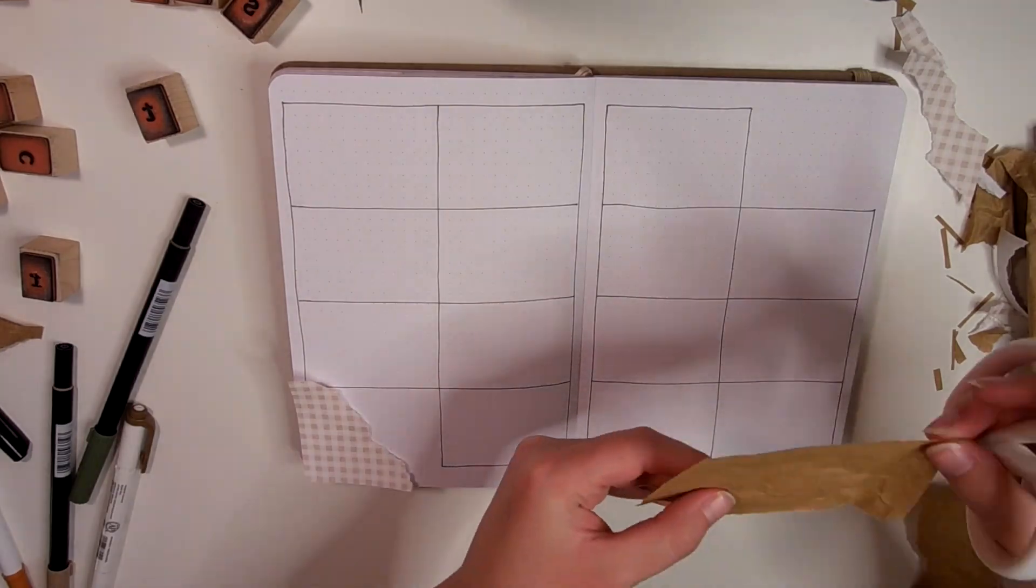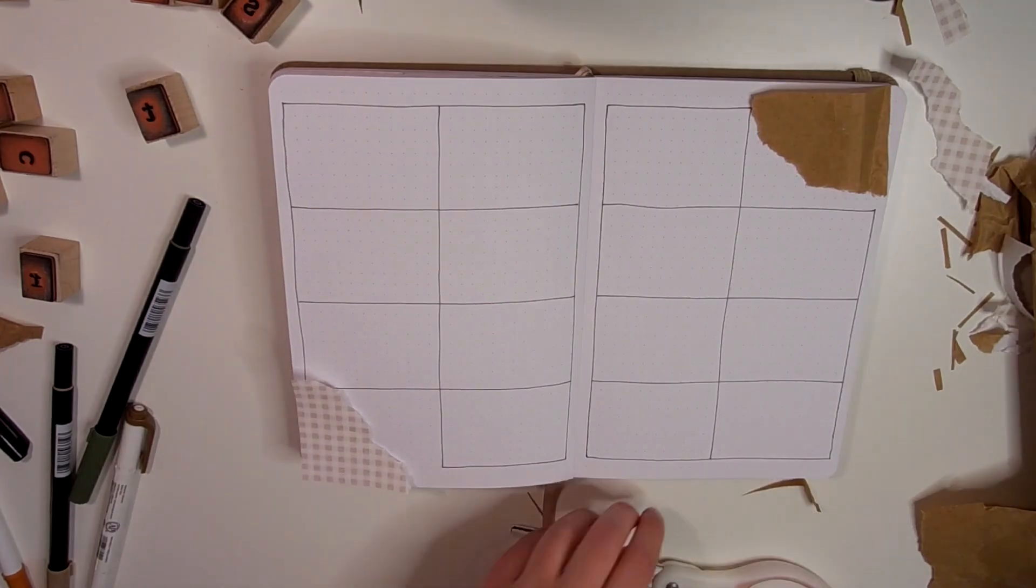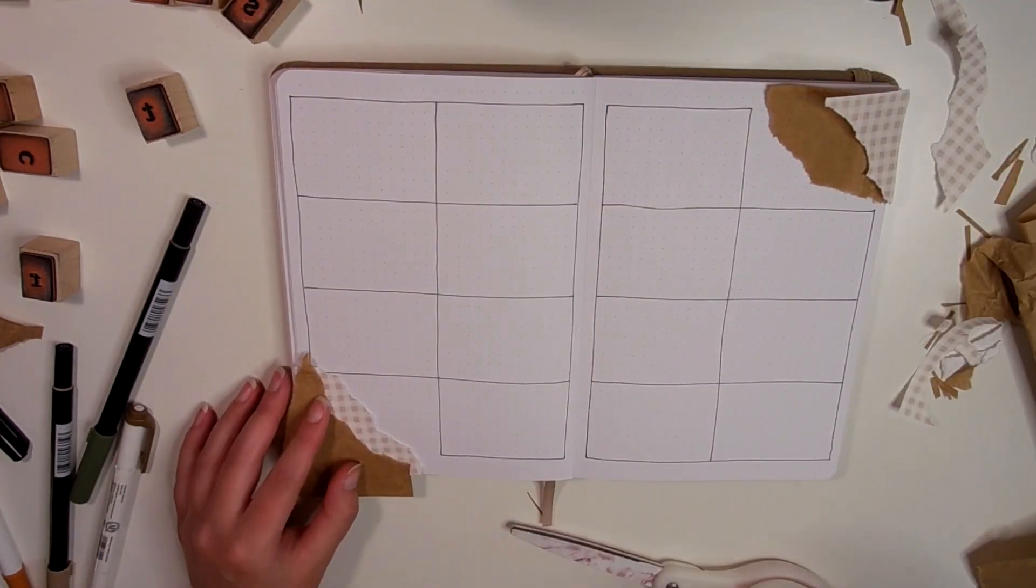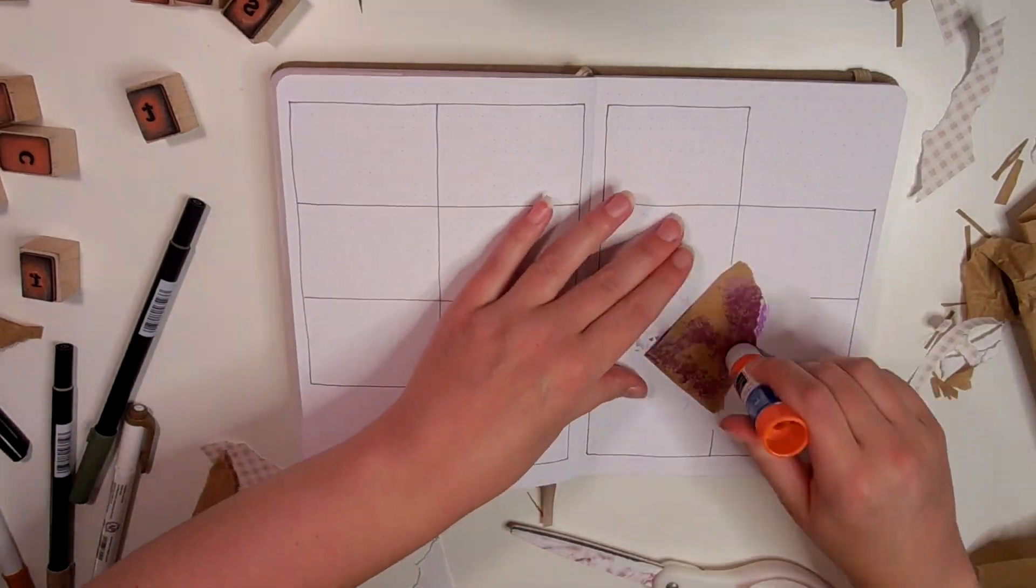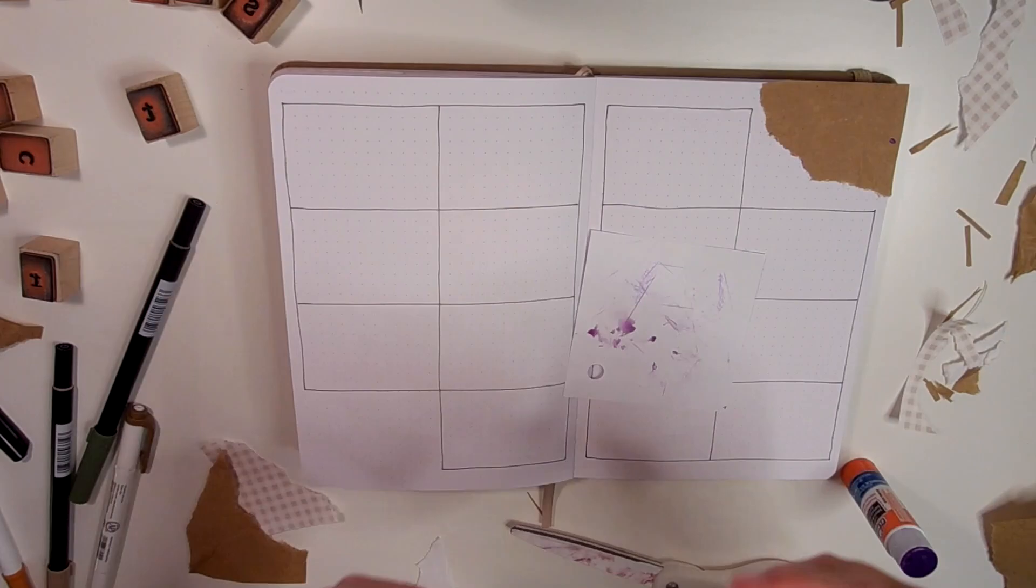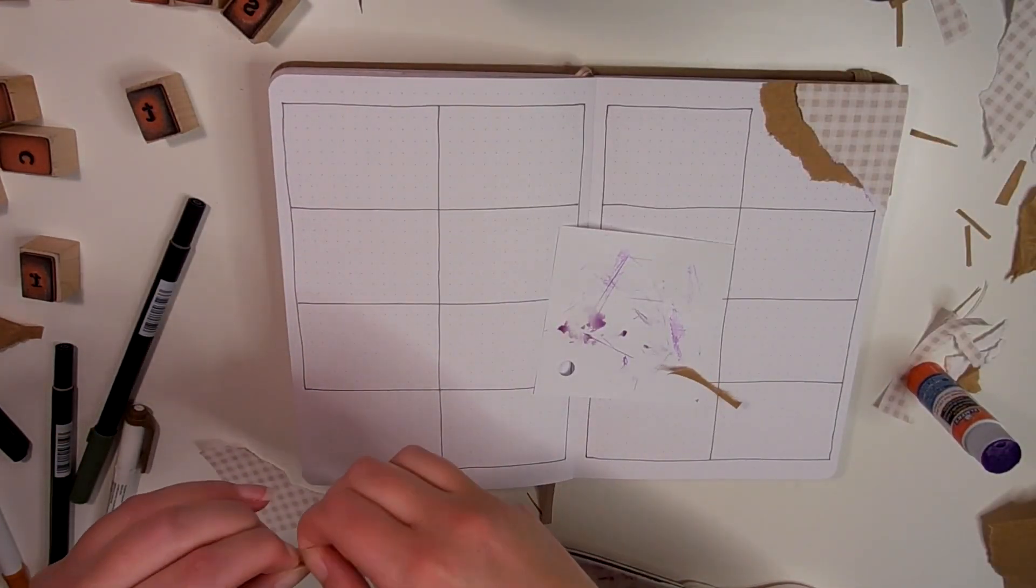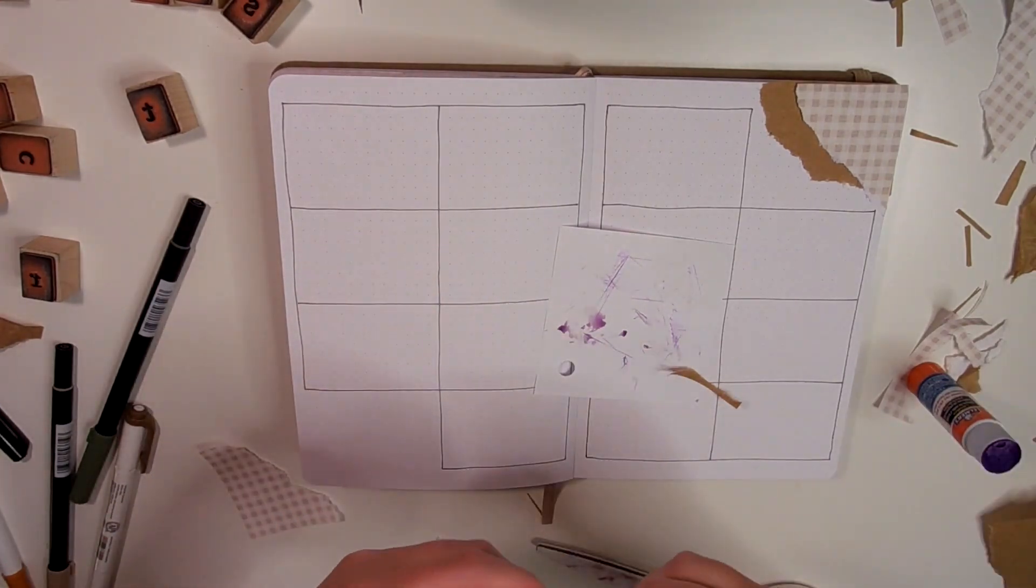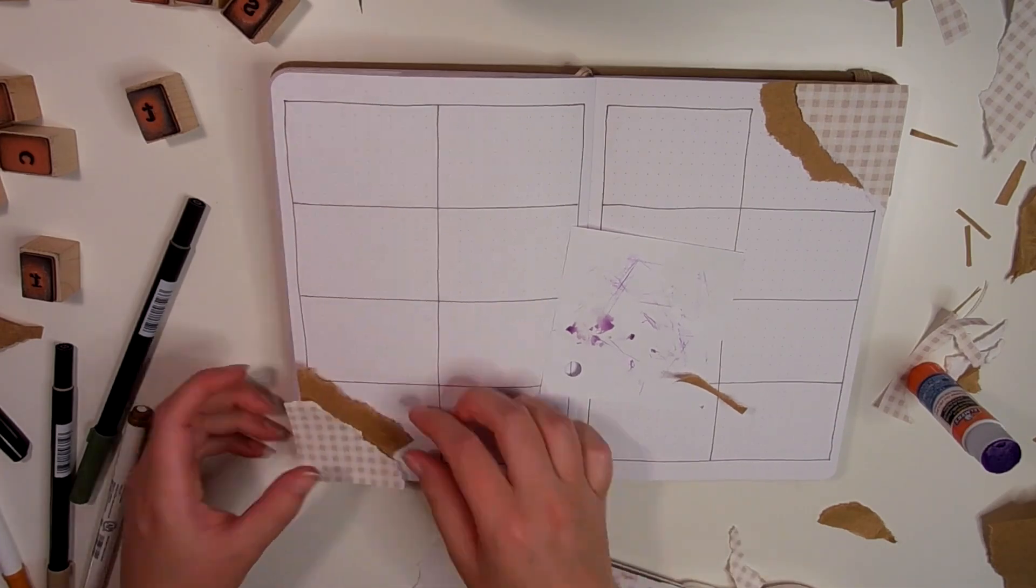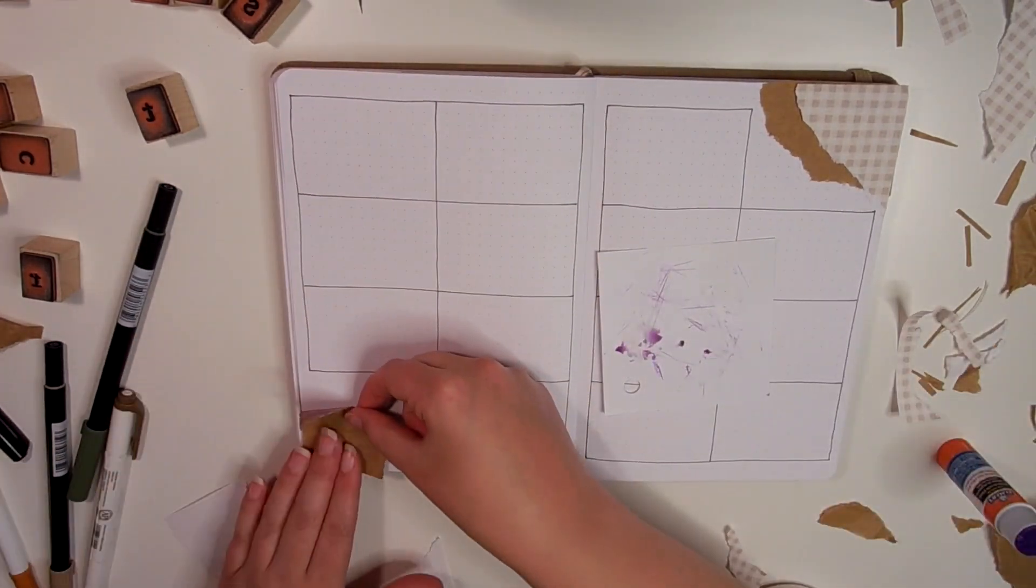I'm layering the plaid and brown paper again in the corners of the spread. I wasn't sure if I was going to layer it at first, which is why you see me go back and forth, but I decided to do a layered look. For the actual boxes for the days of the week, I go in with a couple of the browns and the green to create a header for each box where I write the days of the week and the actual numbers.